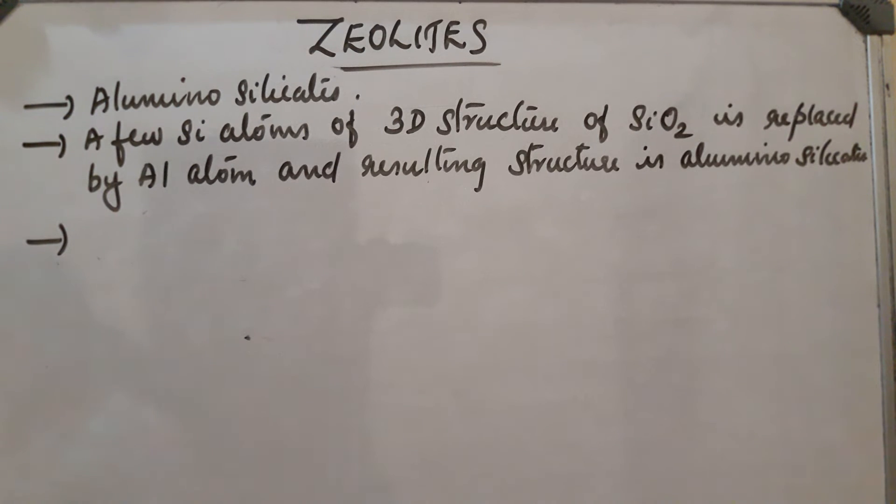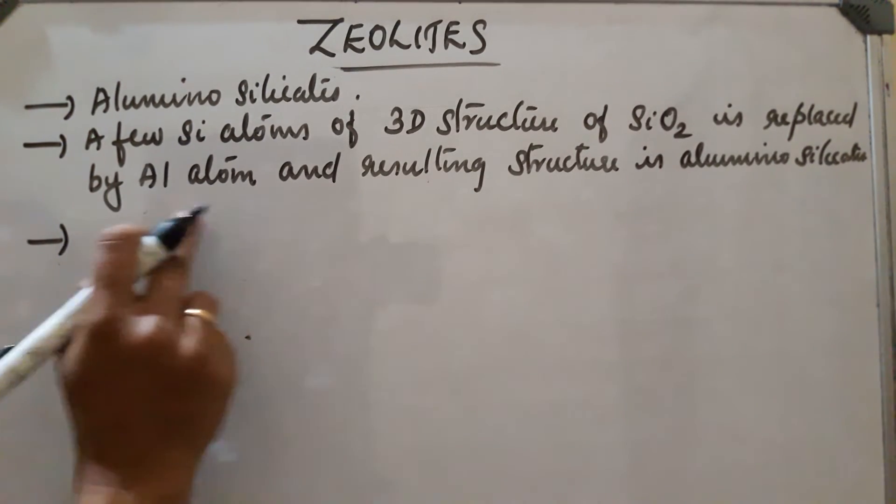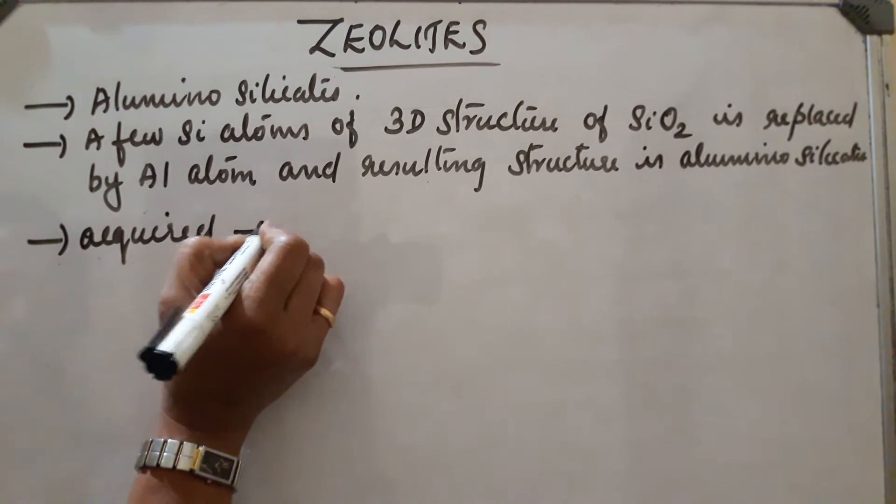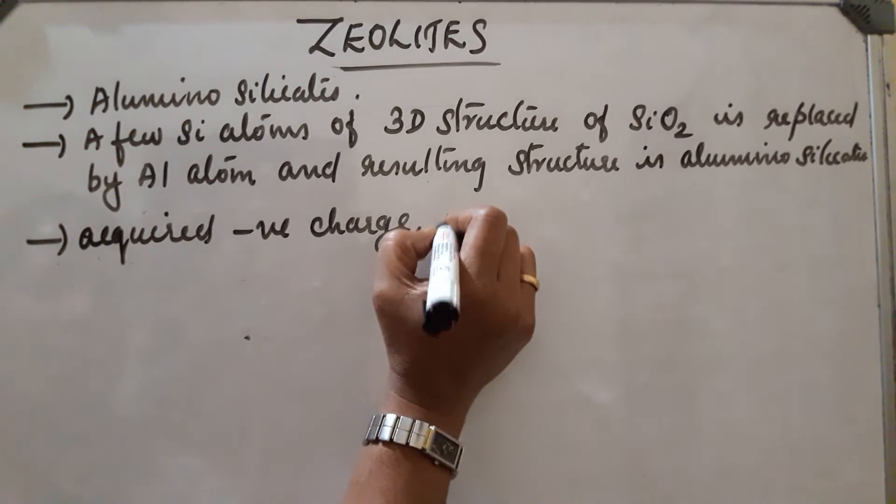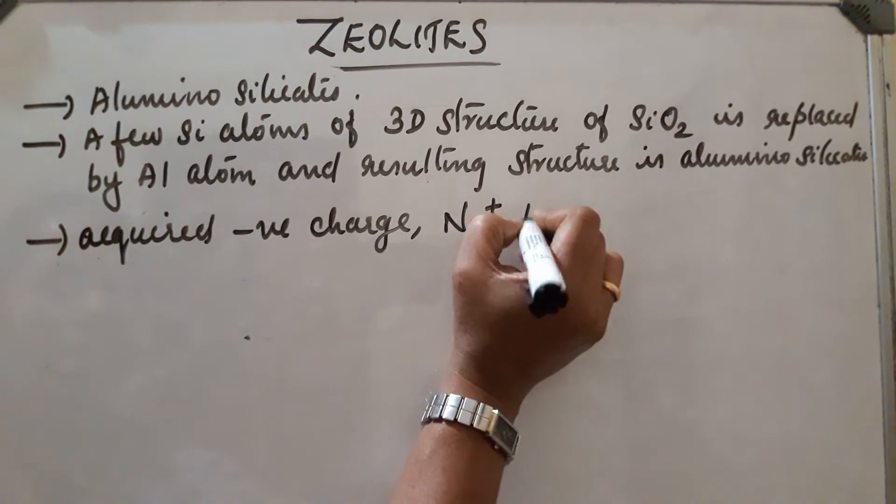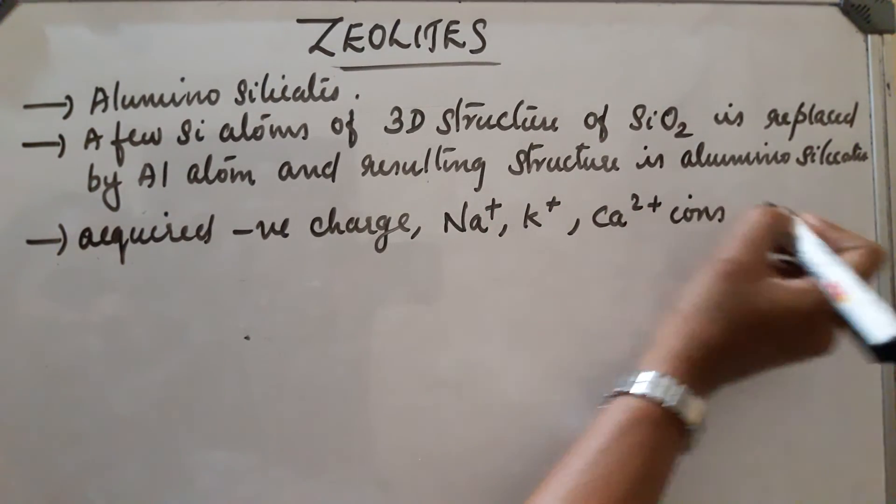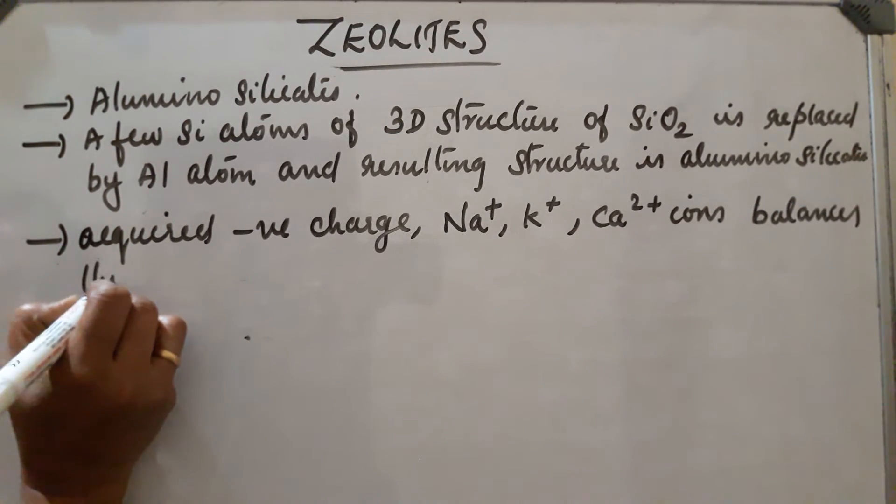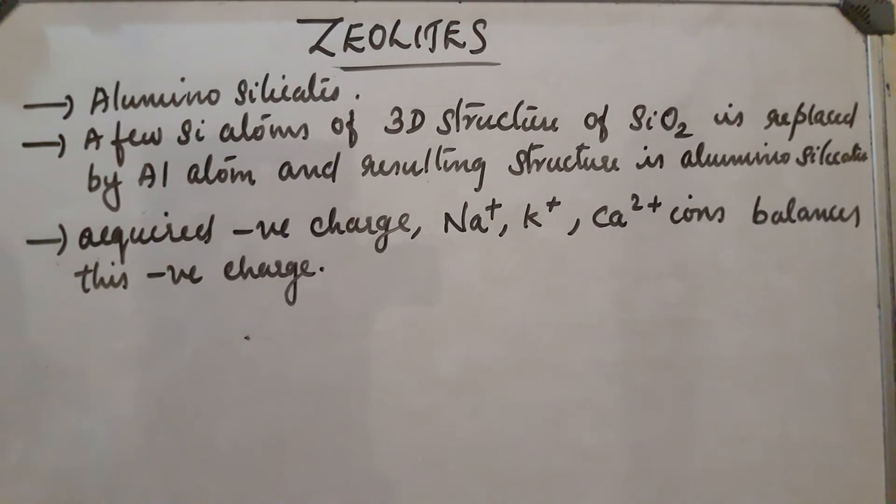This structure contains negative charge. After the formation of this structure, these aluminosilicates acquire negative charge. This negative charge is balanced by Na+, K+, or Ca2+ ions.